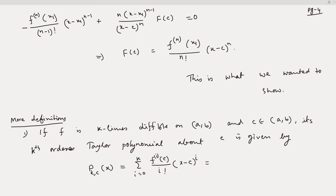Explicitly, the Taylor polynomial is: f(c) plus f'(c) over 1 factorial times (x−c), plus f''(c) over 2 factorial times (x−c)², and so on up to the k-th term.